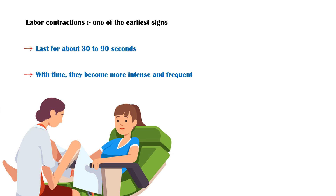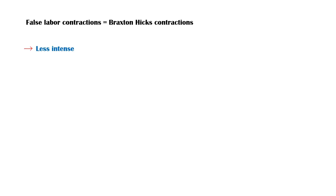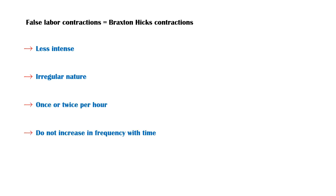However, it is important to differentiate between true and false labor contractions. False labor contractions are also known as Braxton-Hicks contractions. Unlike true contractions, these are less intense and have an irregular nature. They usually occur about once or twice per hour, do not increase in frequency with time, and they resolve with movement. In addition, other signs of labor will not be present with Braxton-Hicks contractions.